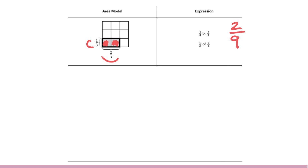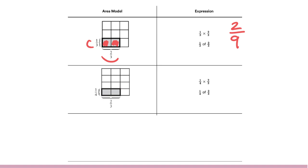Let's take a look at a different problem. Here we have one fourth times two thirds, or one fourth of two thirds. We can see our two thirds is similar to what we showed in the first area model problem. We are first splitting our area model into thirds and shading two of them. Then we are breaking those two thirds into fourths, as shown in the area model. The portion that is one fourth of the two thirds would be those two parts, which of the whole would be two twelfths.